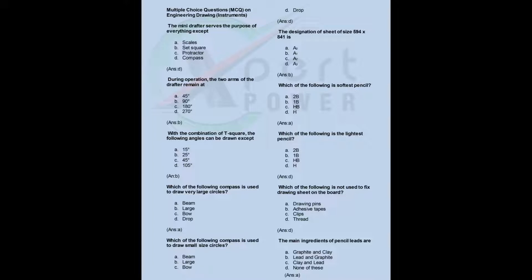The designation of a sheet of size 594 x 841 is: a) A0, b) A1, c) A2, d) A3. Answer: B. Which of the following is the softest pencil? a) 2B, b) B1, c) HB, d) H. Answer: A.